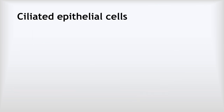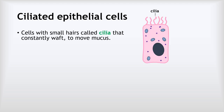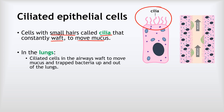Our last type of specialised cell is the ciliated epithelial cell. These are cells that have small hairs called cilia that constantly waft to move mucus around. We find these cilia in all sorts of places in the body, but one of those places is the lungs. We have ciliated epithelial cells in the airways in our lungs and they're constantly wafting to move mucus and any bacteria trapped in that mucus up and out of the lungs.